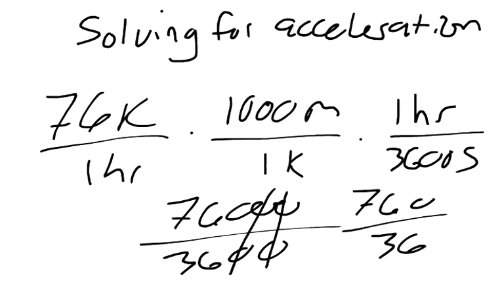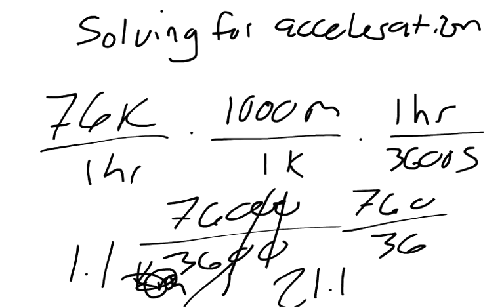760 over 36 is 21.11 meters per second. That is how fast the final speed of the cheetah is. So we got VF equals 21.11 meters per second.